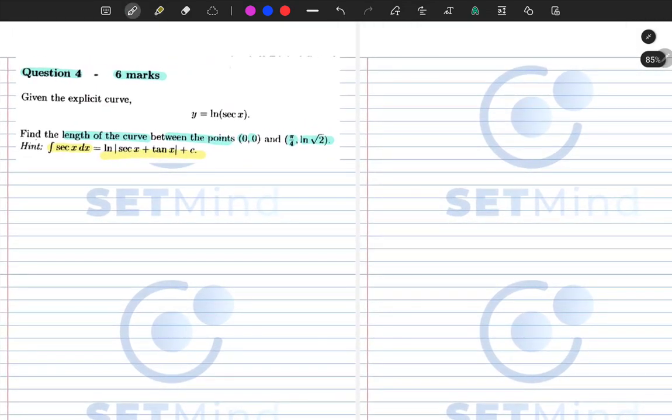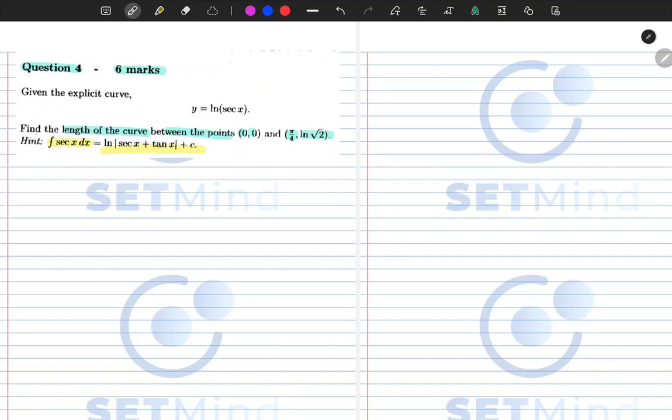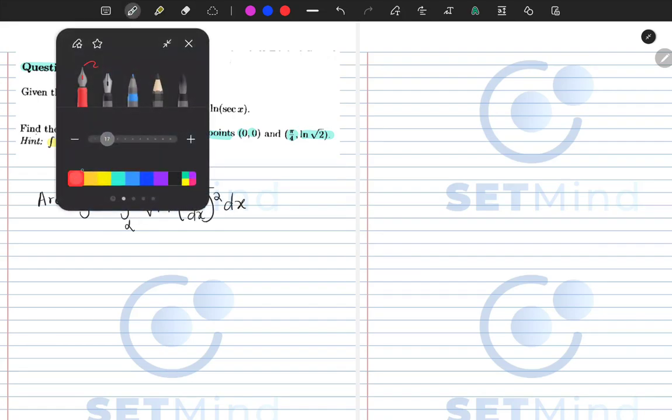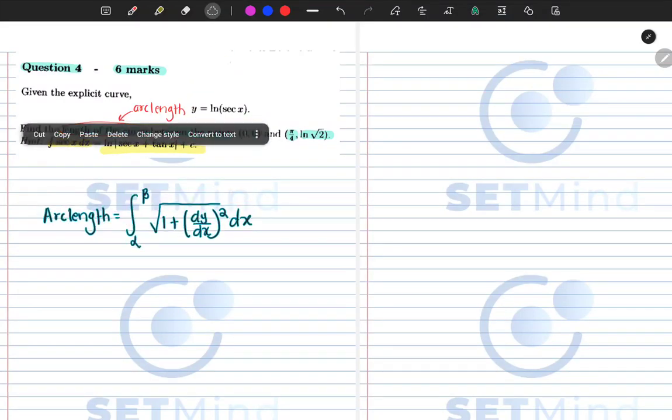So we need to first figure out exactly what is expected of us. When they say they want the length of the curve, essentially they're speaking about what we call arc length. The arc length of an explicit curve is given by the integral from α to β of the square root of 1 plus (dy/dx)² dx. This is how you find the arc length of an explicit curve.